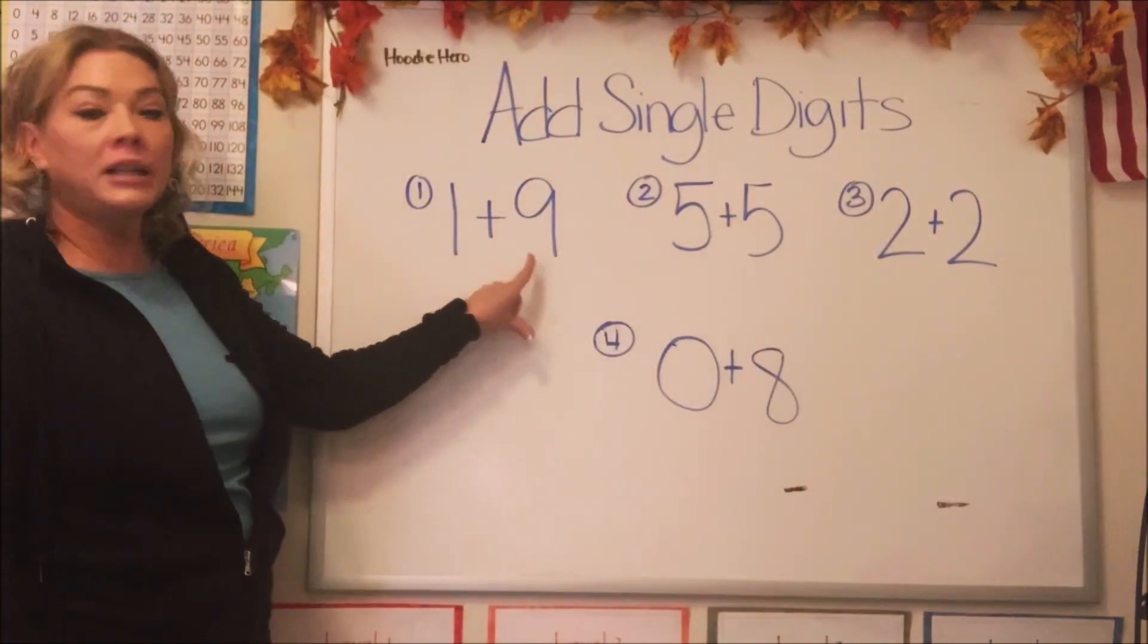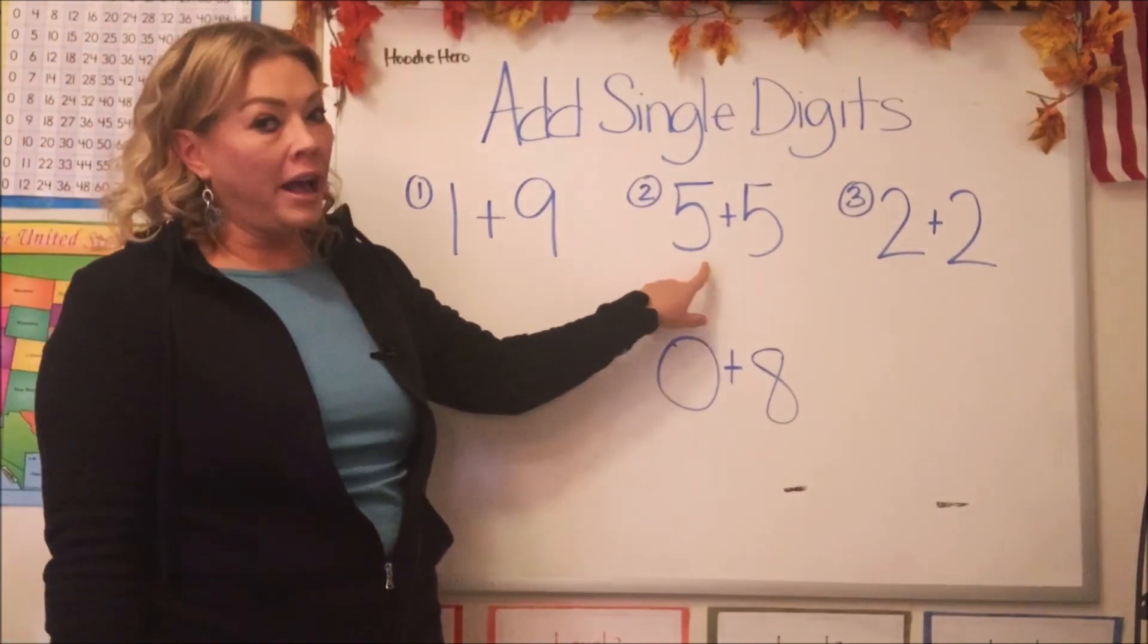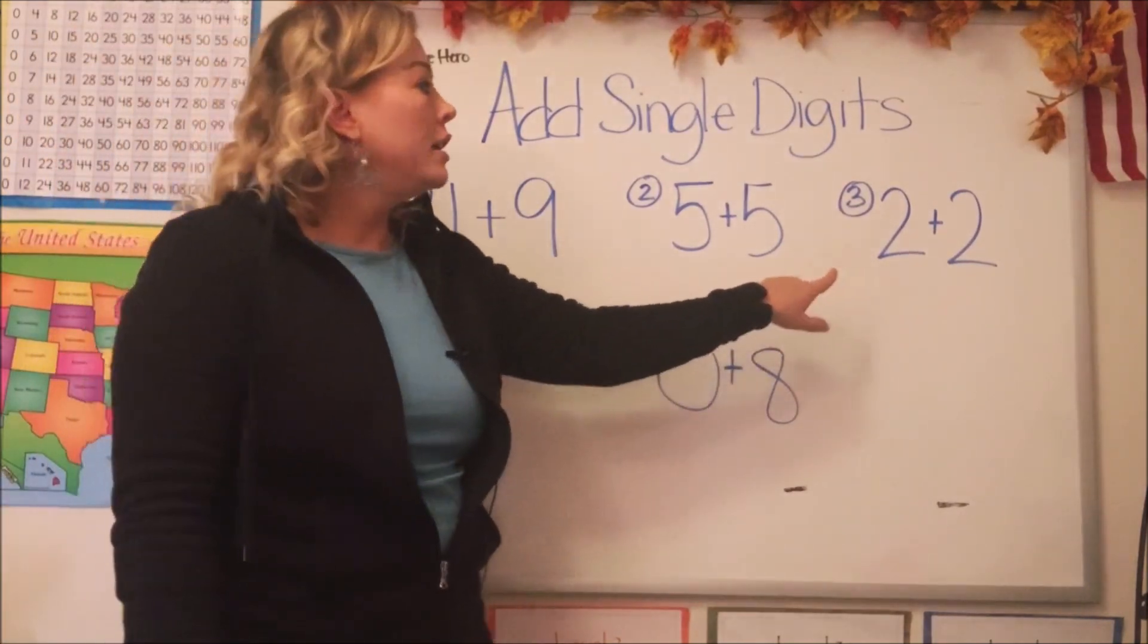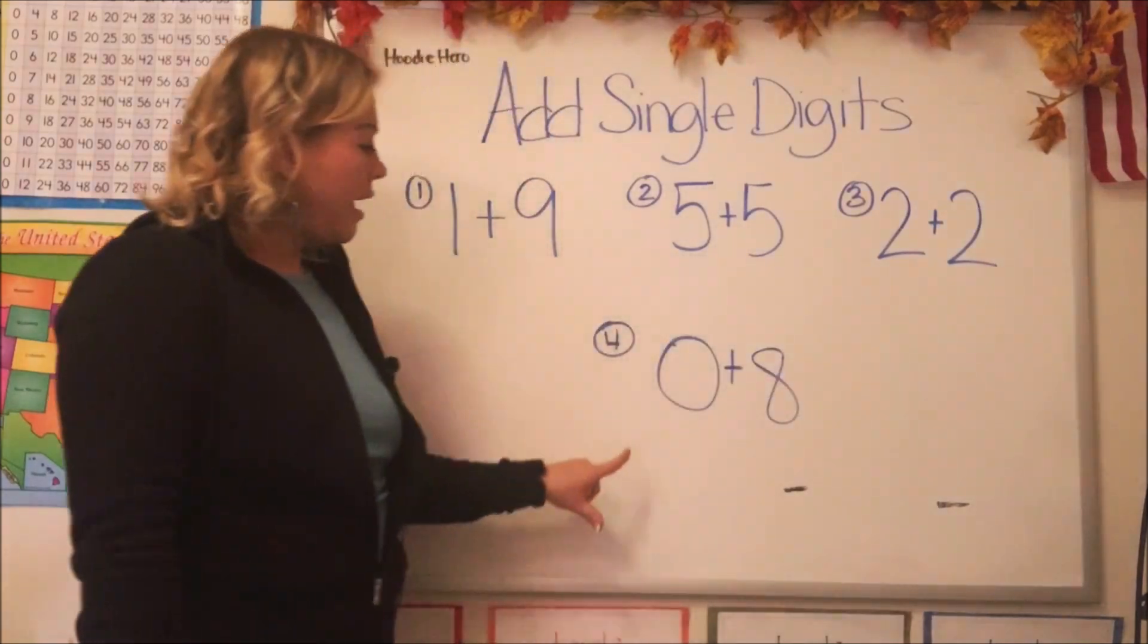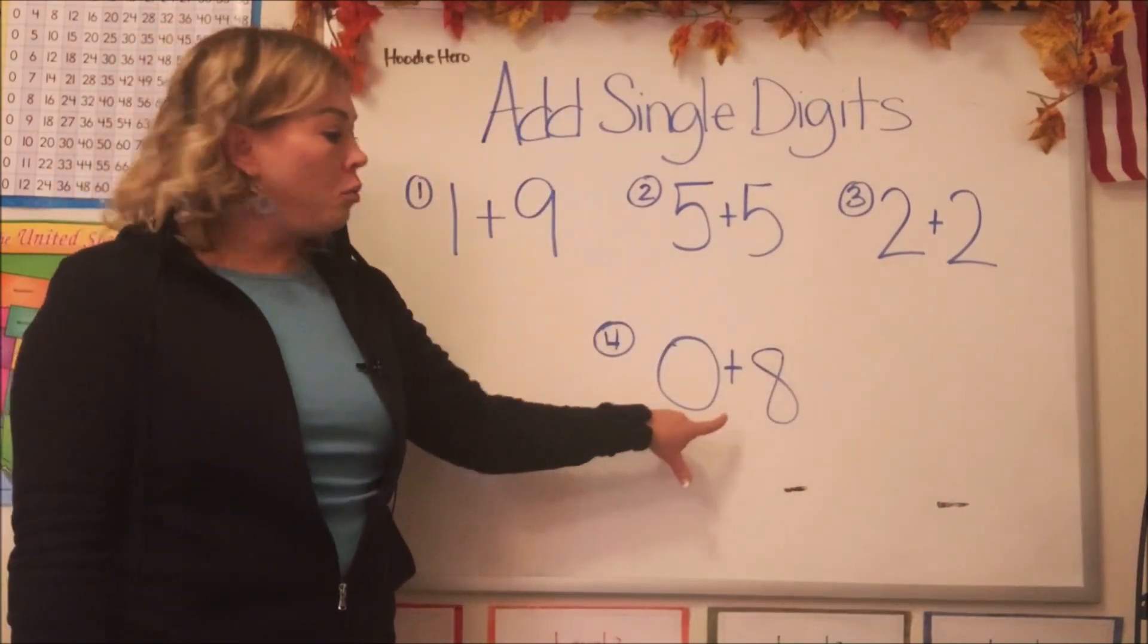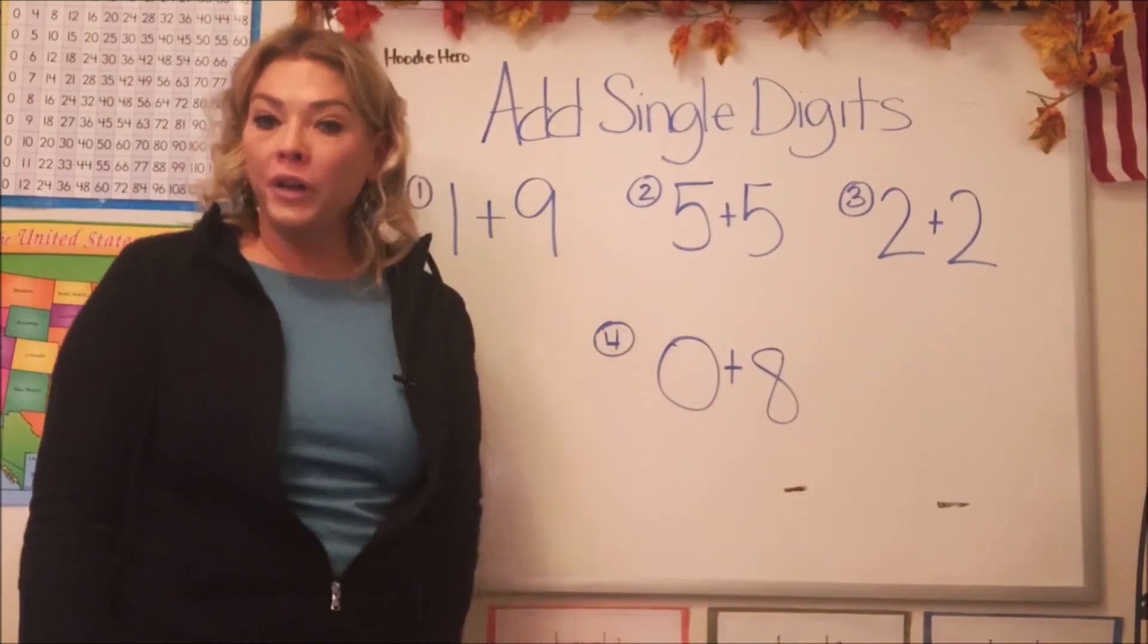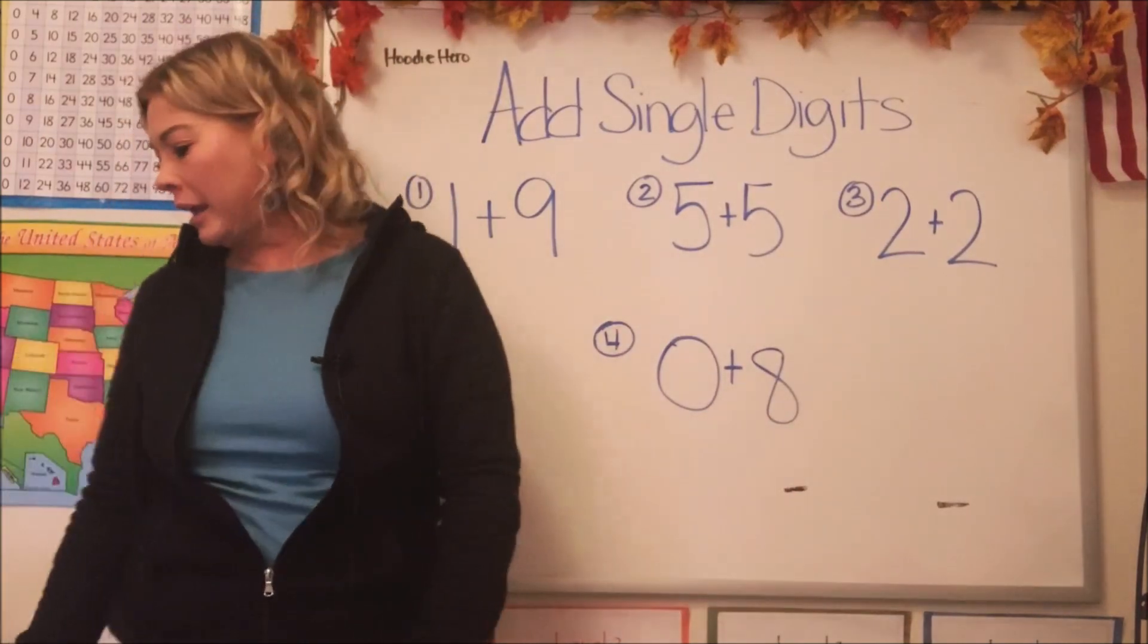See this one? We're adding one plus nine. This one, we're going to add five plus five. This one, we're going to add two plus two. On this one, we're going to add zero plus eight. Do you think we can do it? I think we can.